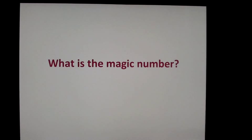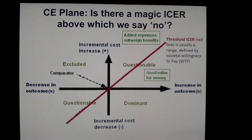Coming back to the concept of cost-effectiveness: what is the magic number above which we say something is cost-effective and below which something is not? If we have an ICER that comes out at $50,000 per life year gained, is that a good deal? Returning to the cost-effectiveness plane, the red line here represents the willingness to pay, or the threshold ICER — we use those two terms interchangeably. The threshold ICER represents the maximum willingness to pay of a society.